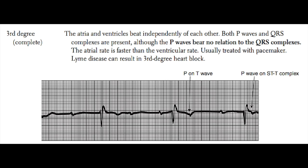Some classic causes of 3rd degree AV block include Lyme disease in young people, which can damage the conducting system of the heart, as well as Chagas disease and myocardial infarctions that damage the conduction system. Elderly patients with type 2 heart block will often progress to 3rd degree heart block and present with syncope due to bradycardia.